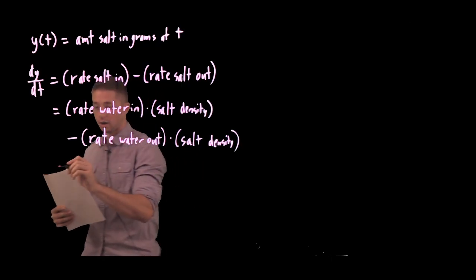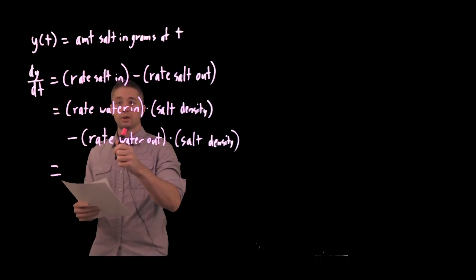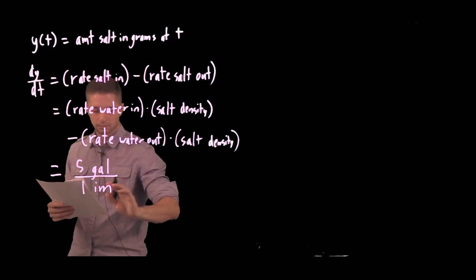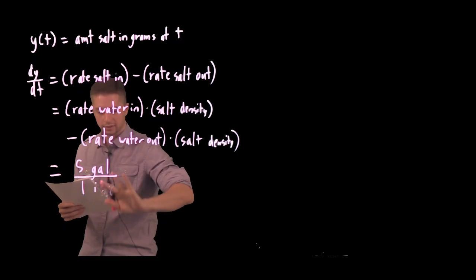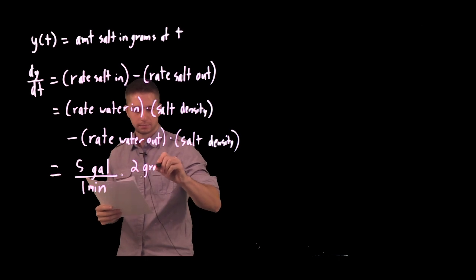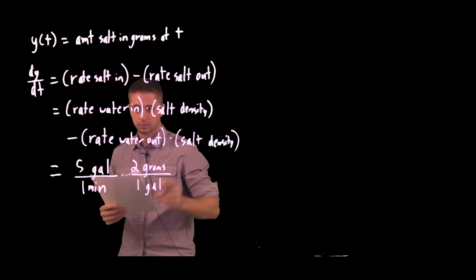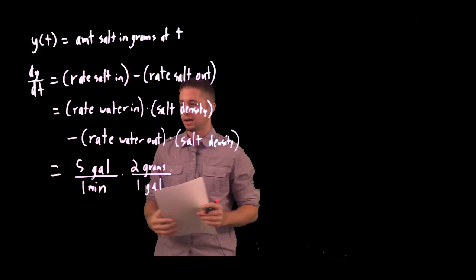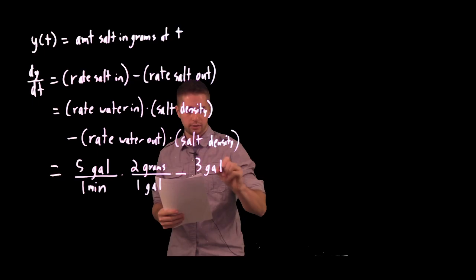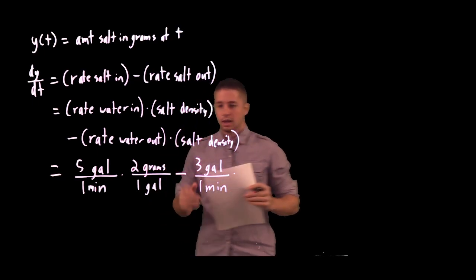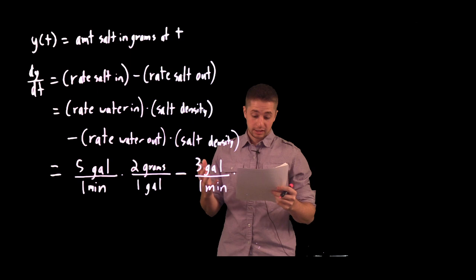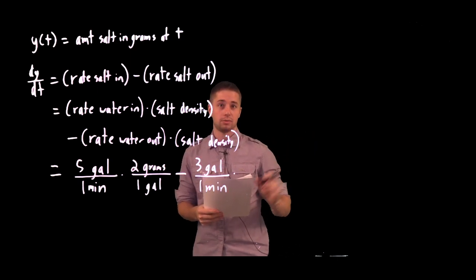Water is coming in at a rate of 5 gallons per minute, and the salt density in that water is given to us: 2 grams per gallon. Now, water is leaving at 3 gallons per minute. The salt density of the water going out is the tricky part — it's the amount of salt in the tank divided by the volume of water in the tank.